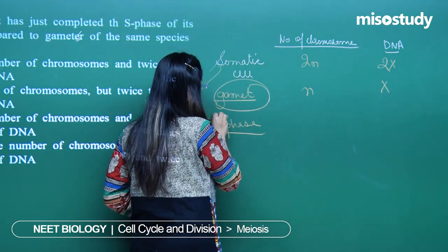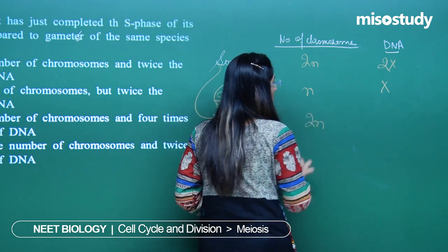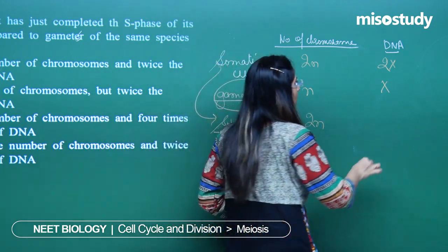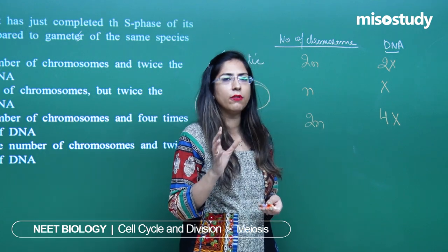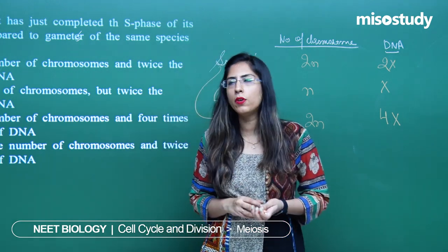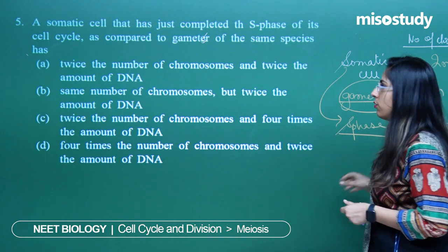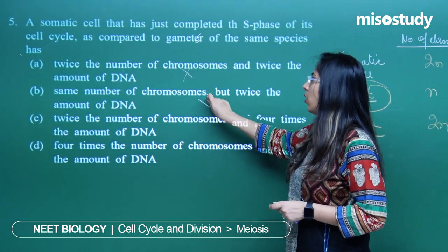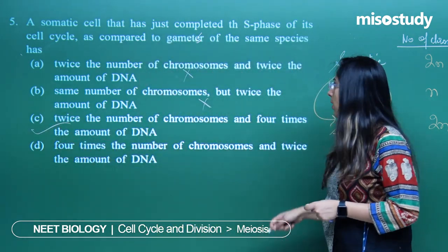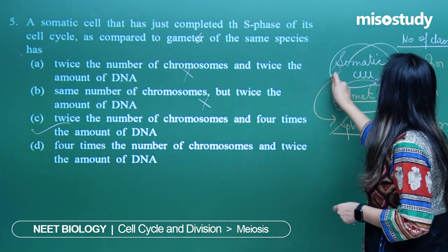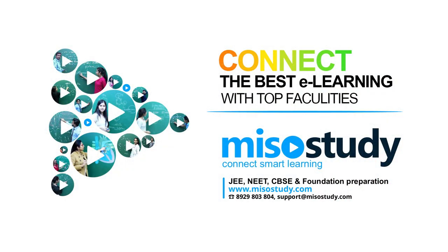So the somatic cell after S phase has twice the number of chromosomes and 4 times the amount of DNA compared to the gamete. Option A says twice the number of chromosomes and twice the DNA — not correct. Option C says twice the number of chromosomes and 4 times the DNA — this is the correct option. The correct answer is 2N chromosomes and 4X DNA. Correct option is C.